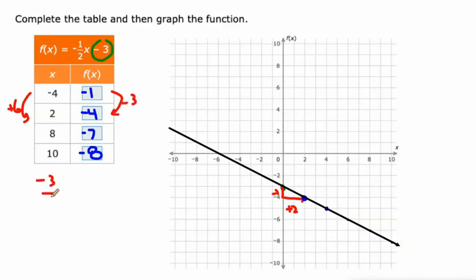So, negative 3 over 6 is negative 1 half. That's our slope. Negative 1 half. Or here, increase of 2 and this is a decrease of 1. That's negative 1 half. Let's move on.